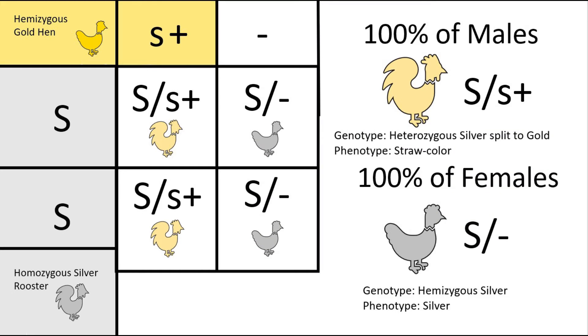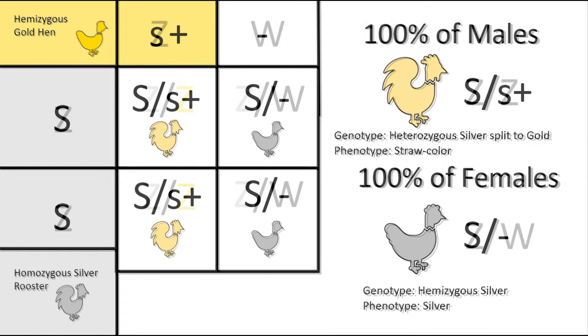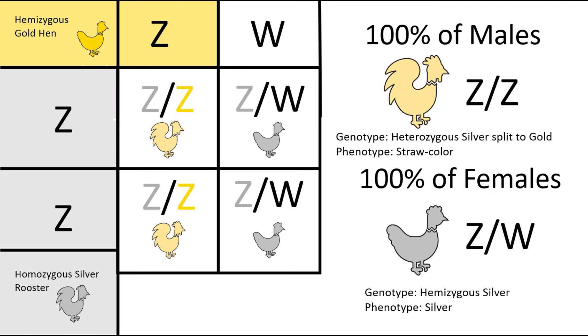In addition to that, hens only pass their silver or gold alleles onto their sons. They can't pass them onto their daughters, because in order for their daughters to be female, they must receive the W chromosome from their mom.